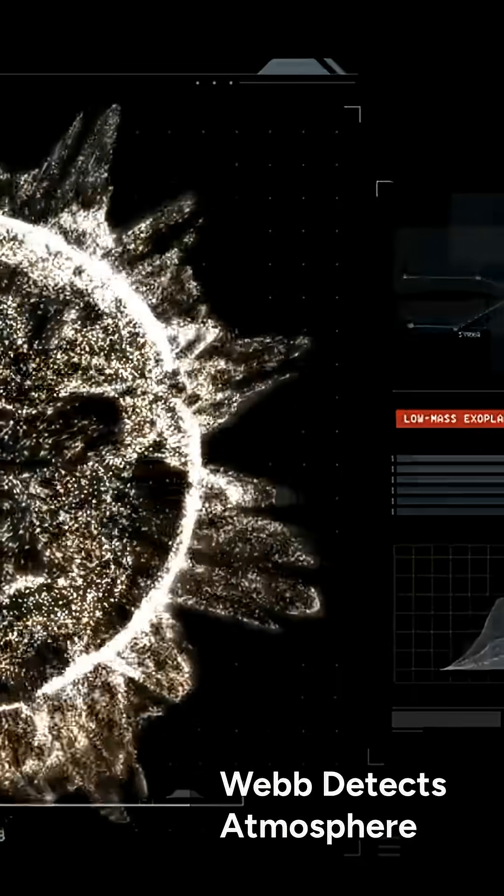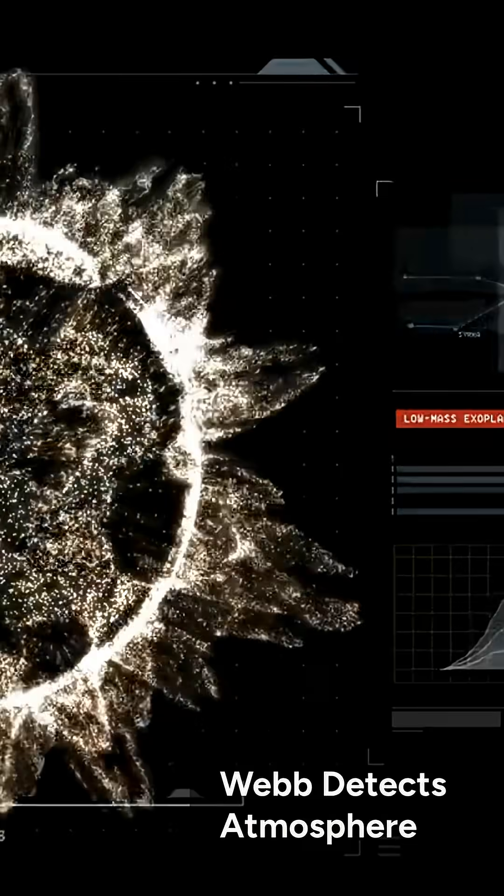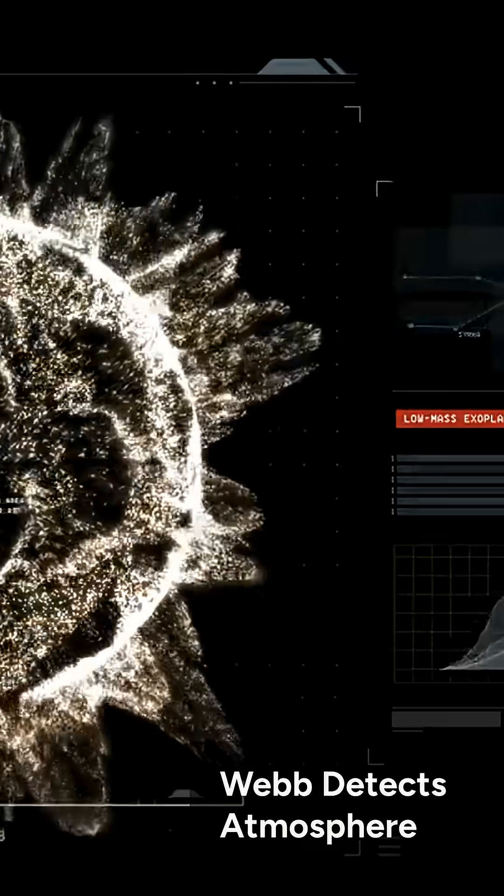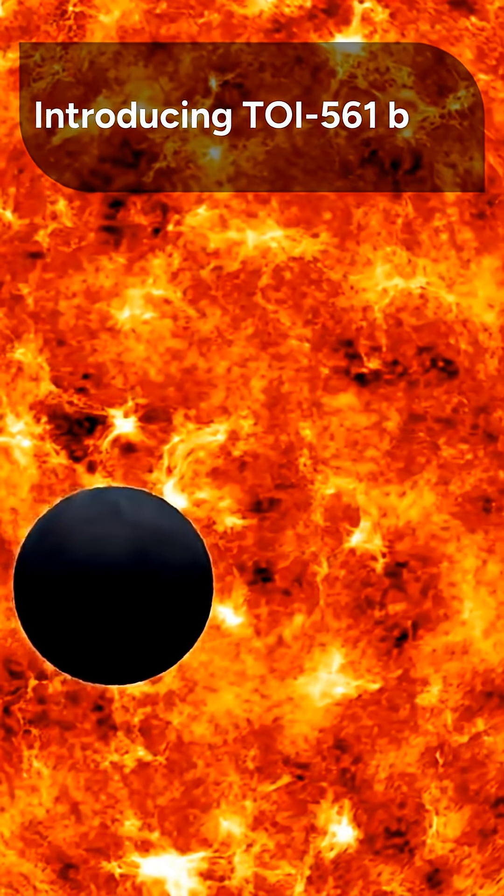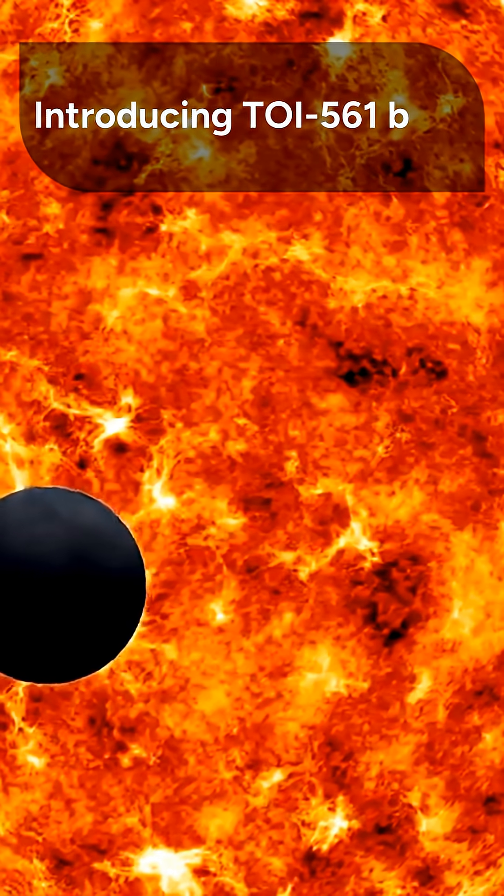Researchers using NASA's James Webb Space Telescope have made a groundbreaking discovery, the strongest evidence yet for an atmosphere on a rocky exoplanet. This exciting find involves an ultra-hot super-Earth known as TOI 561b. Let's explore what makes this exoplanet so unique.